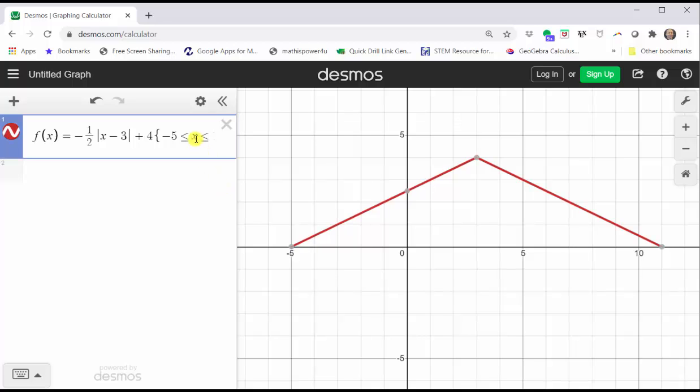And because x is greater than or equal to negative five and less than or equal to 11, because of the equal part, the endpoints are included and should be plotted as closed points. Let's go ahead and do that.